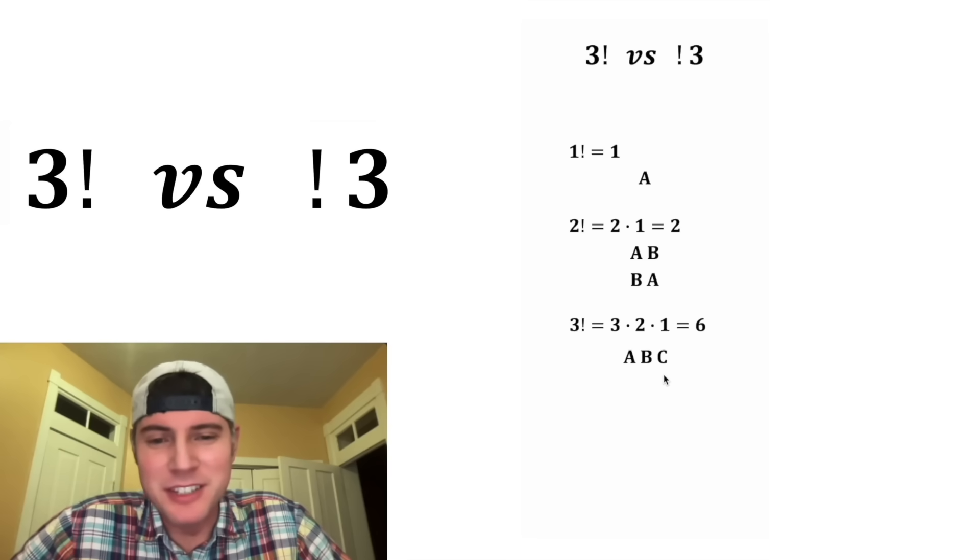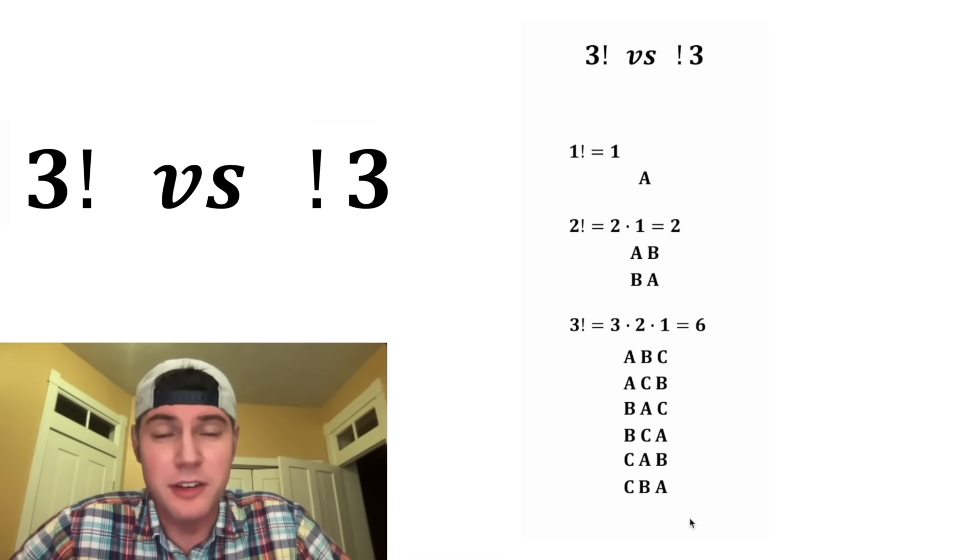And then for 3 objects, AB and C, we can rearrange them all of these different ways. And there are 6 of these, so that's why it's equal to 6.